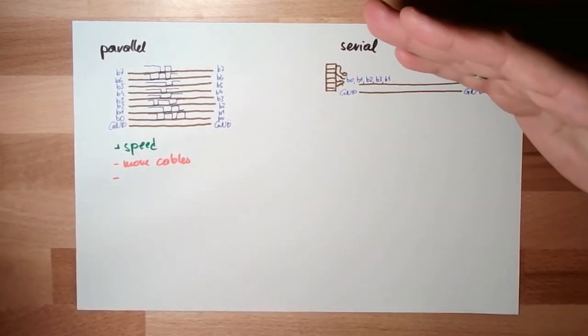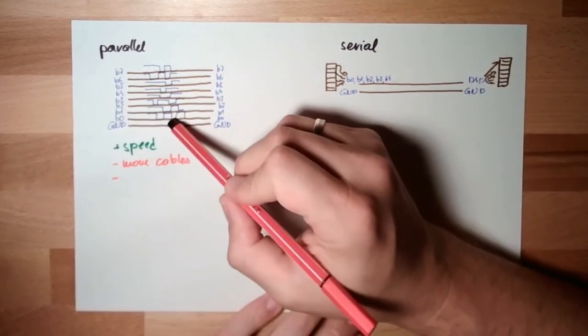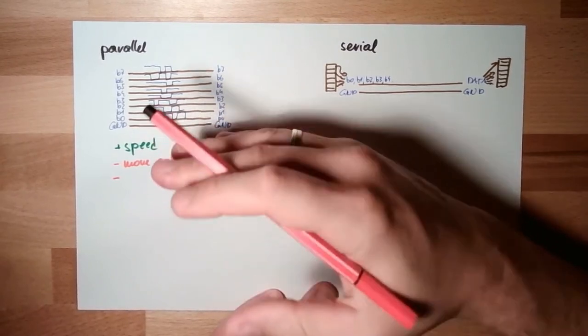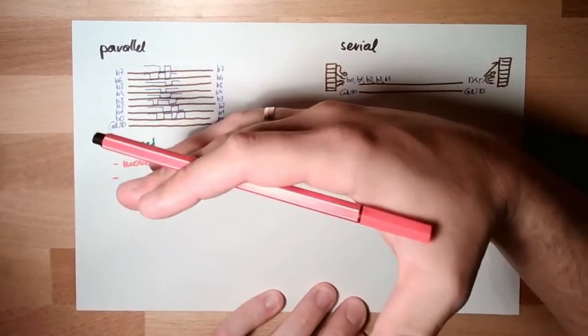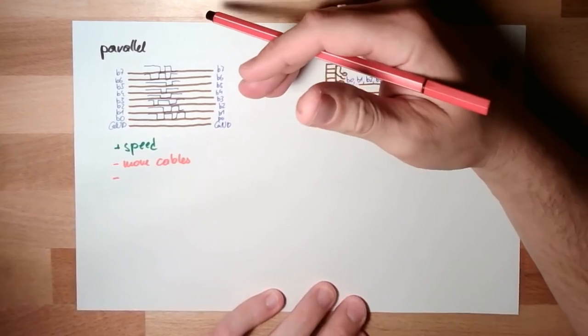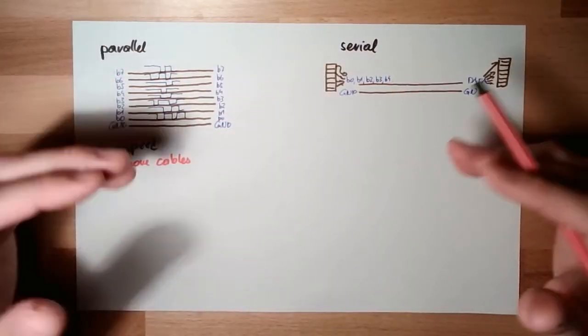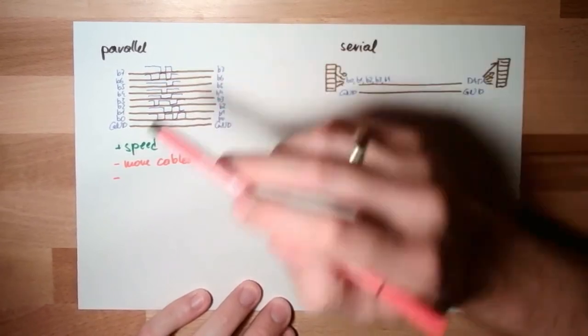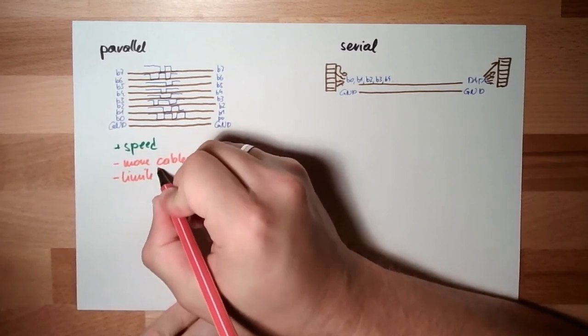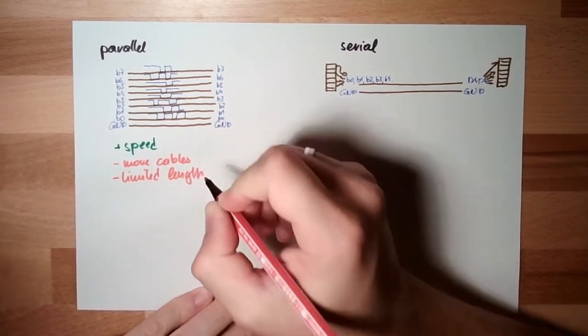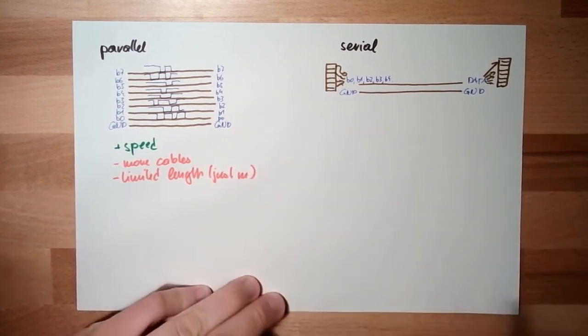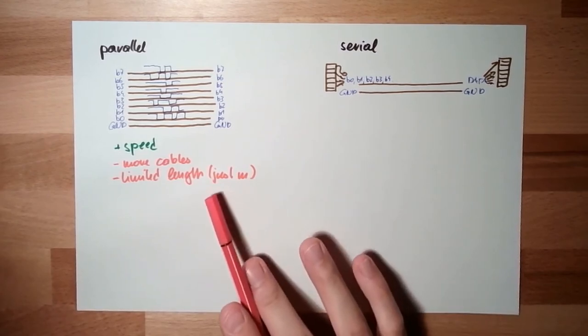then whatever is on here will also be a little bit on here, and also be a little bit on here. So we have some coupling between the lines, Übersprechen. We have some coupling between the lines, and if the line is getting really long, this coupling is strong enough to disturb the communication. So here we have limited length, just some meters.